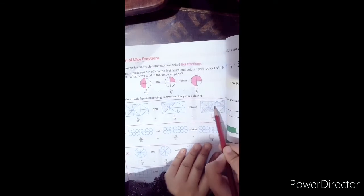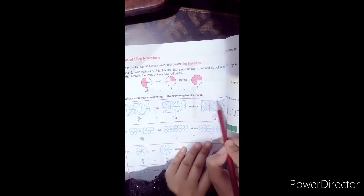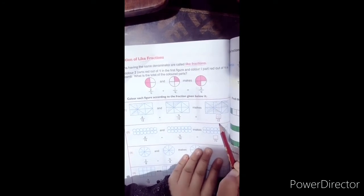Now we color 10. 1, 2, 3, 4, 5, 6, 7, 8, 9, 10. I have filled 10 blocks and 2 blocks remain. 10 by 12.